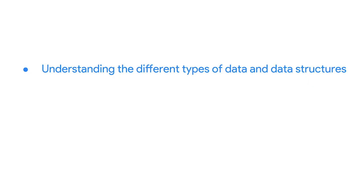Picture this. You're working on a project. You've asked all the right questions, applied structured thinking, and you're completely in sync with your stakeholders. You're off to a great start. But there's another step in the process: preparing the data correctly. This is where understanding the different types of data and data structures comes in.